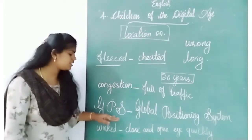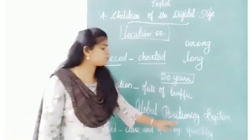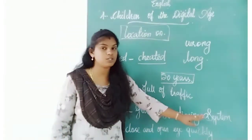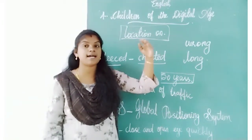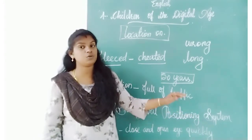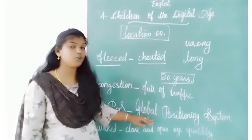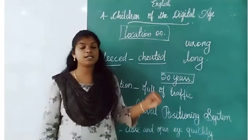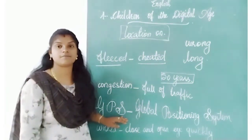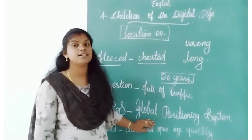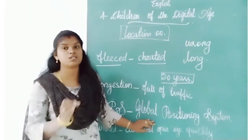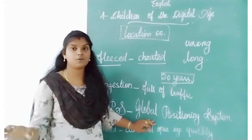One more thing — GPS: Global Positioning System. It is a signal that comes from a satellite. It is used to know the position of a person or any other thing. That is called GPS — a signal from a satellite used to know the position of someone or something.